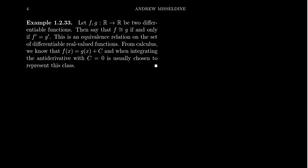I'm going to squeeze in one extra relationship inside of this video — it's just a very quick one. If you have two real-valued differentiable functions F and G from R to R, we can say that two functions are equivalent if and only if they have the same derivative. And this is going to be an equivalence relationship.